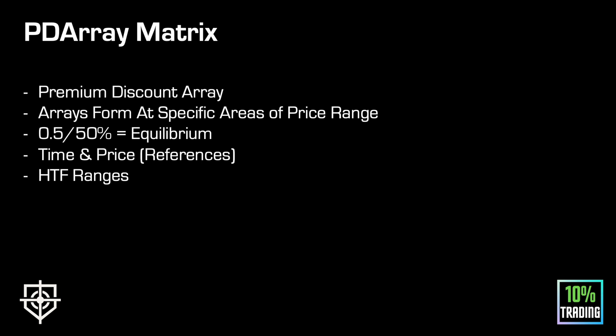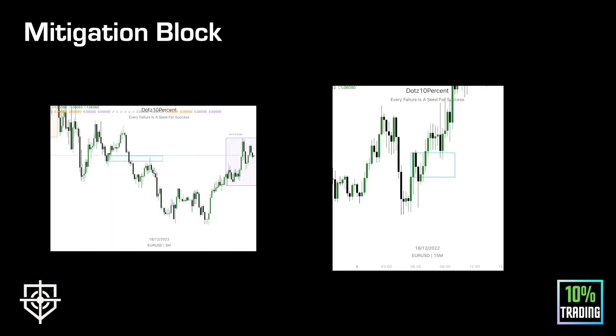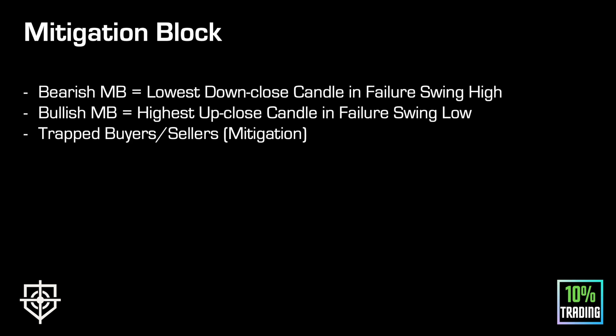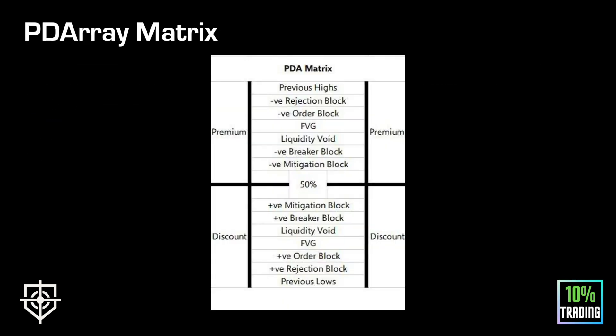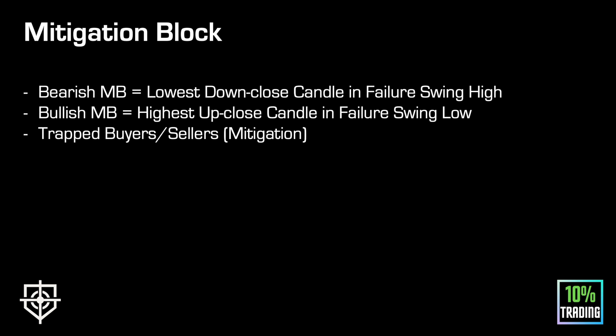Let's get into it. The first step: what is a PD Array? PD Array refers to Premium Discount Array. By now you should know your arrays — your order blocks, fair value gaps, your references to price from the algorithm. Premium discount, you can understand, is applied in a context. Before we get into the PD Array Matrix, I'll take some time to run through all the arrays, some of which I haven't actually introduced you to before.